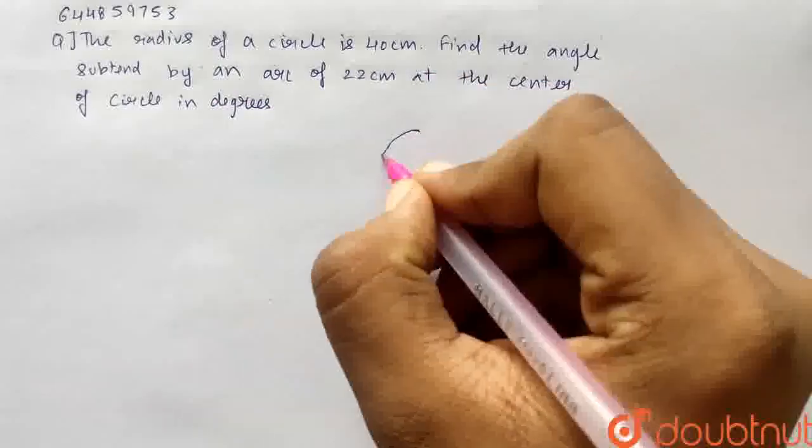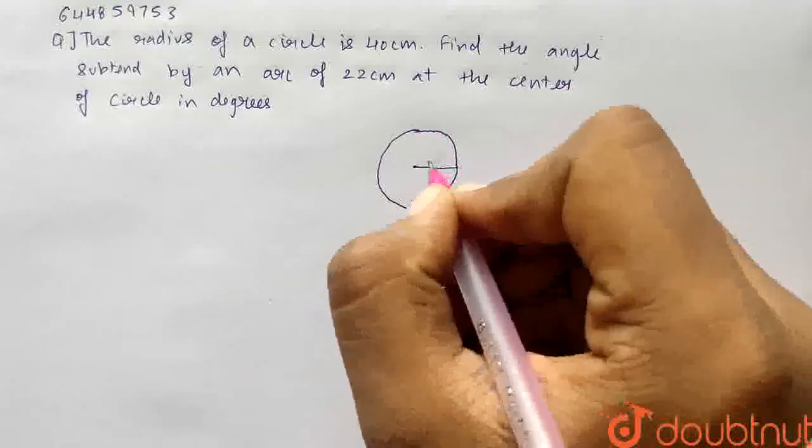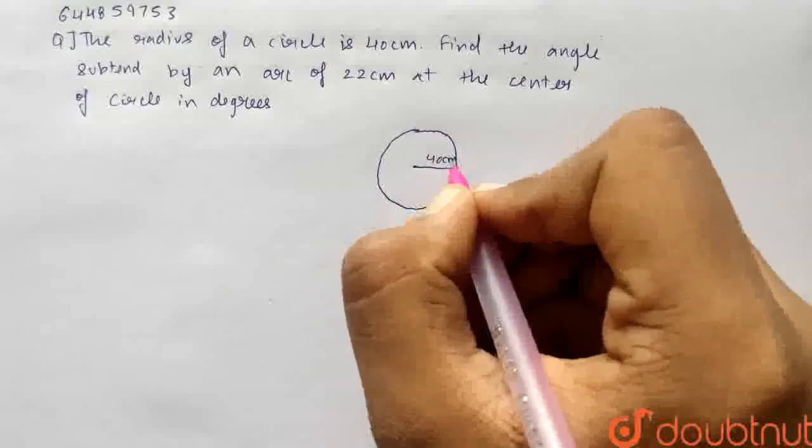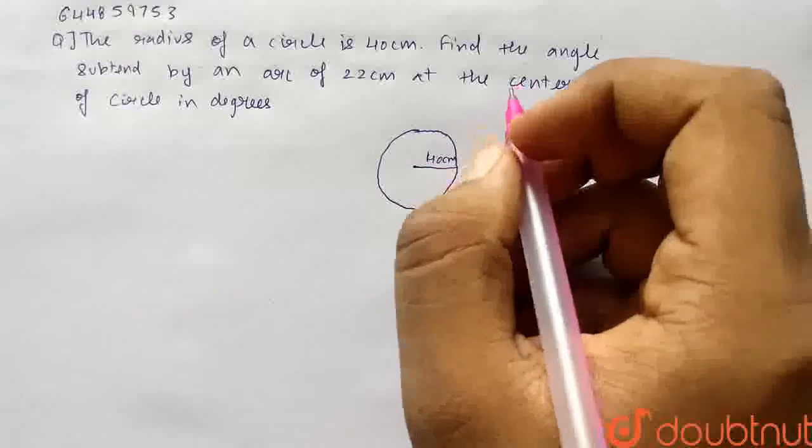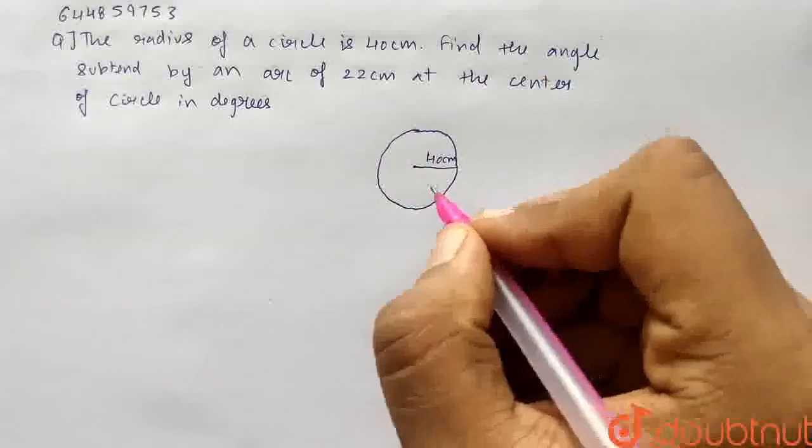So firstly, I will draw a rough circle students. So now, what we are given is the radius of this circle is 40 cm. Now, we have to find the angle the arc subtends.